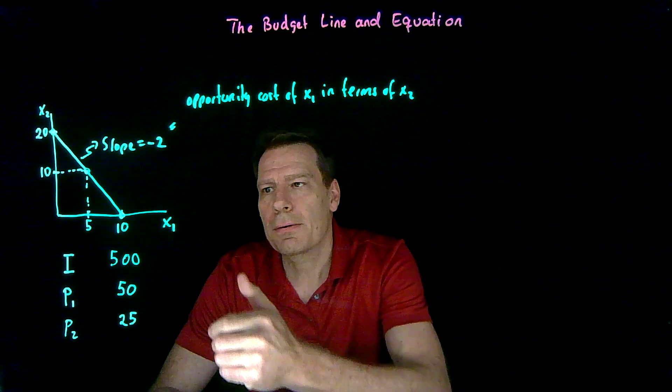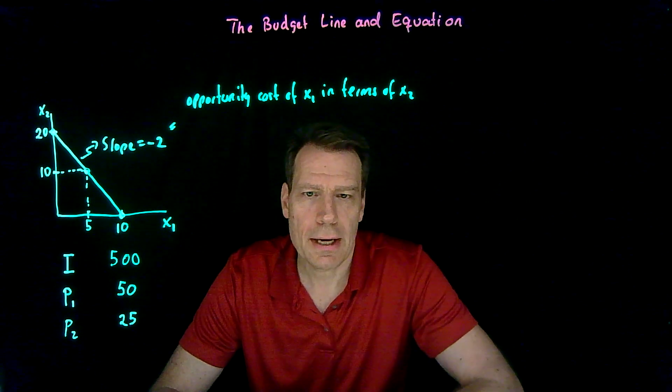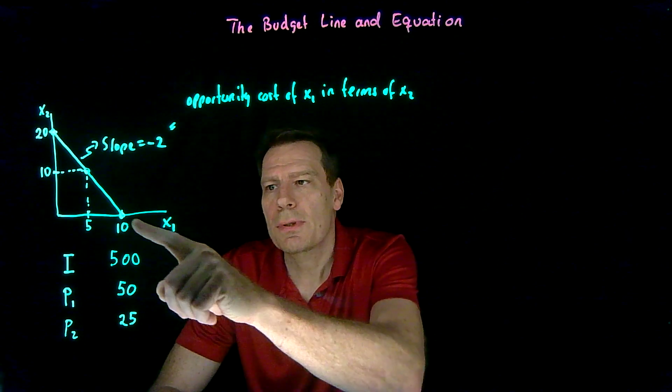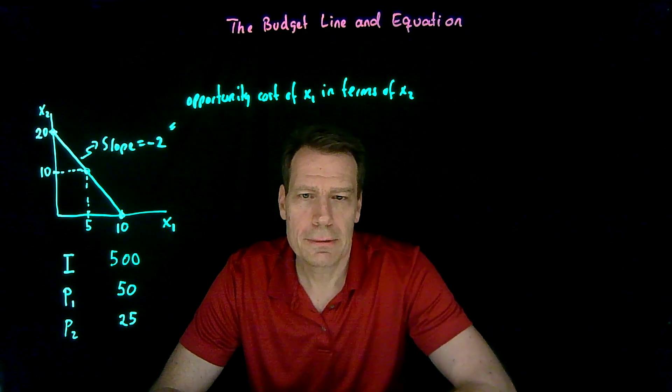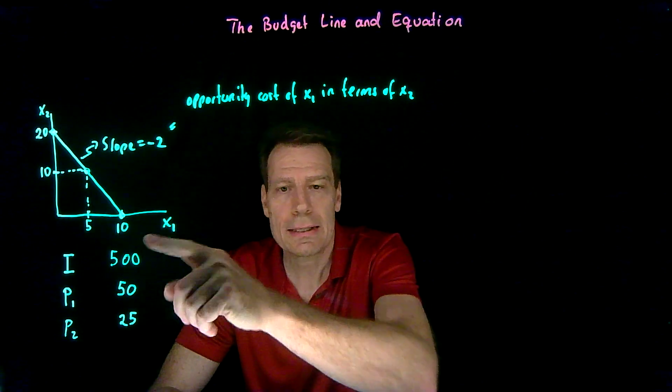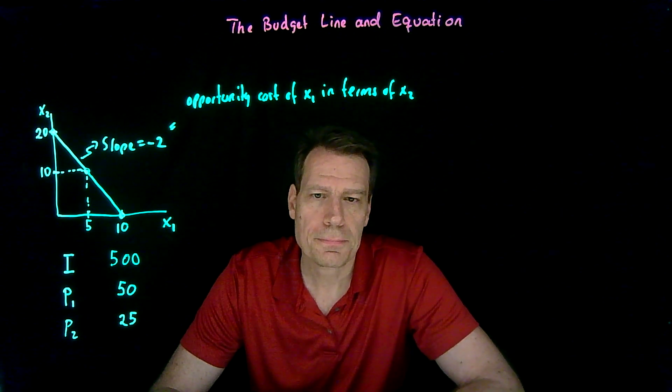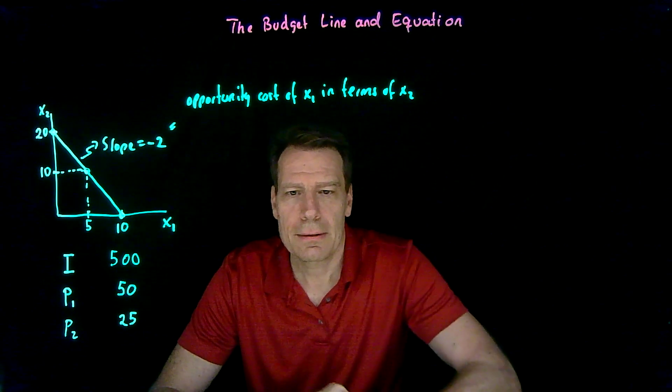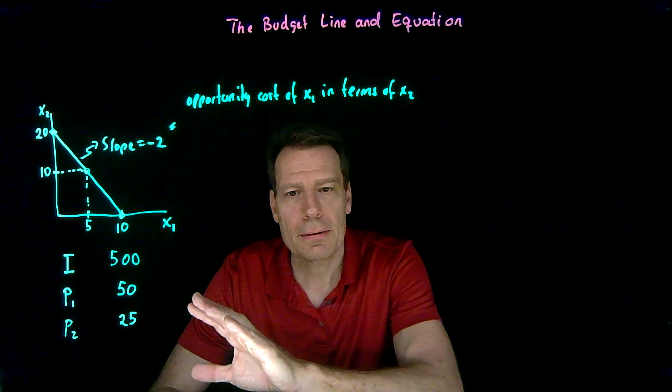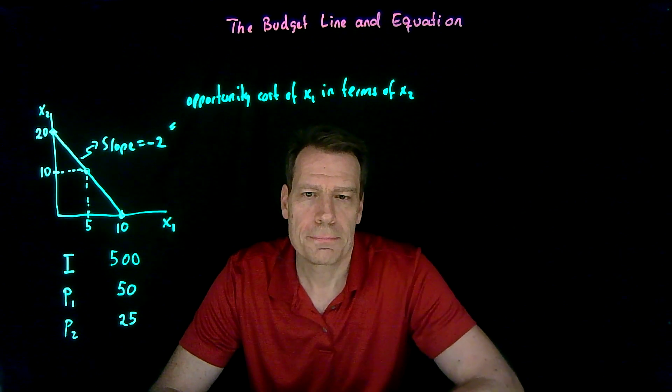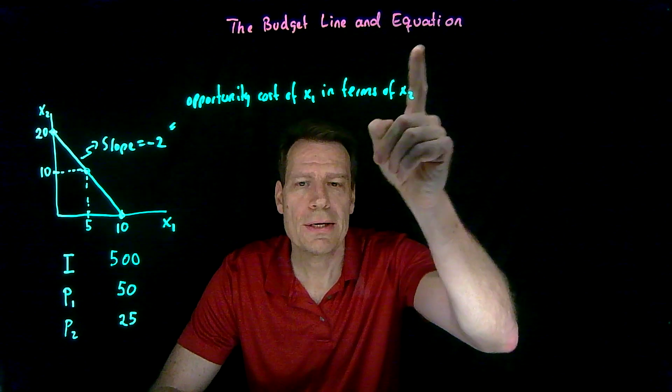So we can see how you can sort of graphically derive what a budget line would be by just starting with the extreme bundles that you could afford and then drawing the line that connects them assuming that you always pay the same prices for the two goods. How would we do the same thing if we didn't start by graphing but we started with the math? What would a budget equation look like?